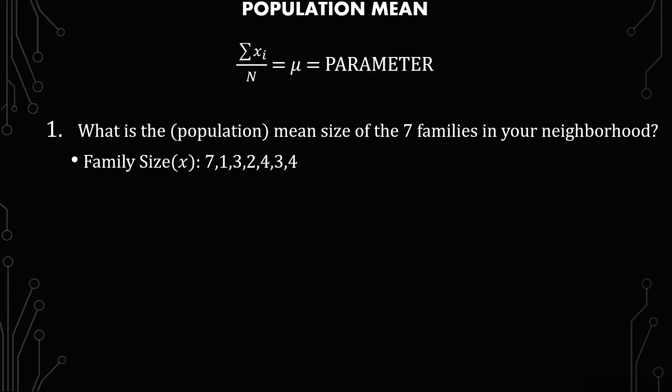You don't have 8, 9, 10, or 11. You don't have 3. You just have seven families. So you're getting the totality of everything, and it's going to be crunched into this one parameter — not a statistic.